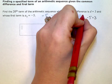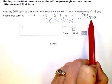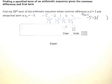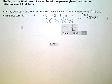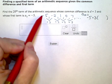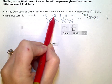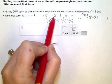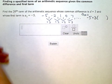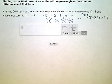My 20th term, or a sub 20, is going to equal negative 5 plus 3 added a certain number of times. Now, I'm not adding 3 twenty times because I didn't have to add 3 to get the first term. I only started adding 3 to get the second term. So I'm really adding 3 nineteen times — or n minus 1 times — to get to this term.